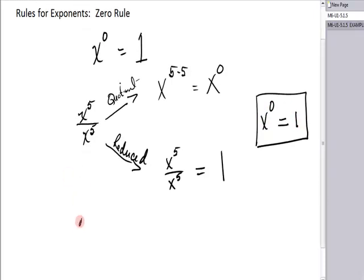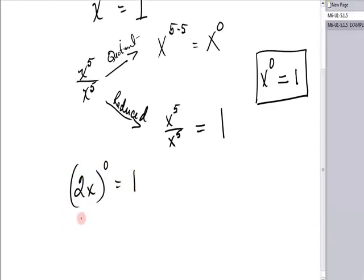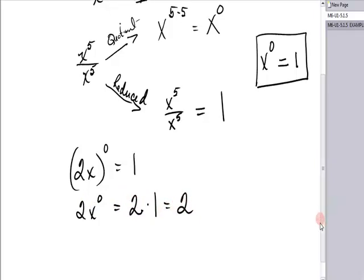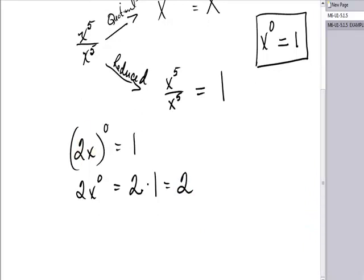If I have 2x to the zero, that's equal to one. If instead I have 2x to the zero without parentheses, the two remains a factor. It's two times one, which is two. So if I want the entire product to be raised to the zero power, I would have to put it in parentheses. Let's look at a few exercises.